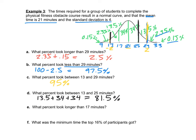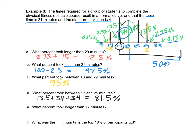What percent took longer than 17 minutes? Since the curve is symmetric, everything above the mean (21 minutes) is already 50%. Then we just add the 34% section between 17 and 21. So 34 plus 50 equals 84%. You could also add 34 + 34 + 13.5 + 2.35 + 0.15 with a calculator and still get 84%.